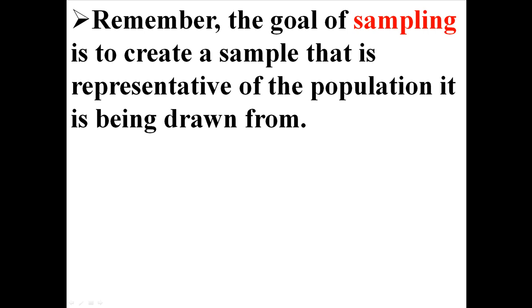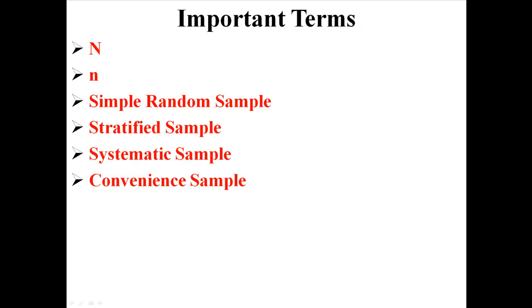Remember, the goal of sampling is to create a sample that is representative of the population it's being drawn from. That's it for sampling. You should know the difference between capital and lowercase n, they represent population and sample sizes, and also understand the distinction between the four different kinds of sampling.